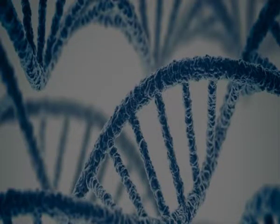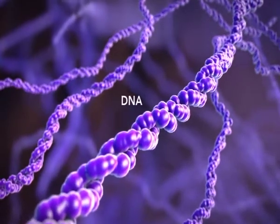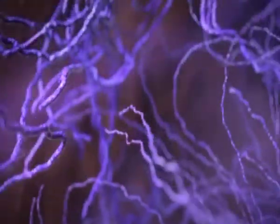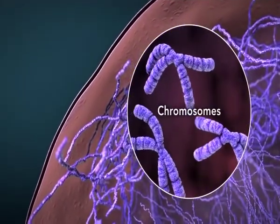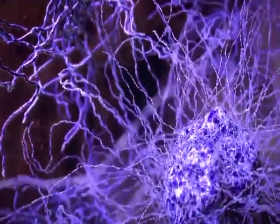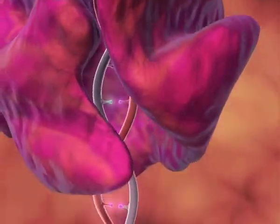Learning about heredity traits and their genetic correlation is one such task. Heredity traits are the units transmitted from one generation to the next, called genes. The genes reside along the macromolecule known as DNA. The DNA in conjunction with the protein matrix forms nuclear protein and becomes organized into chromosomes. All genes in a chromosome are said to be linked to one another; hence, they belong to the same linkage group. DNA is normally a stable molecule.